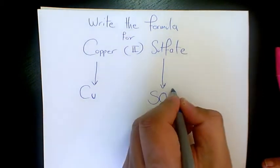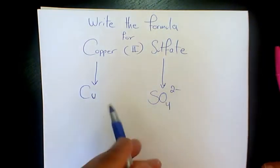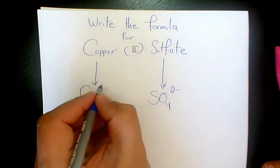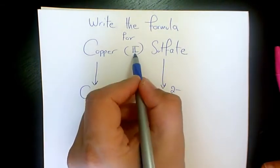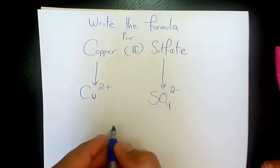Sulfate has a charge of negative 2 (or 2-). Copper will have a charge of positive 2 because we have the 2 in copper(II), meaning the charge is +2. So we have negative 2 and positive 2.